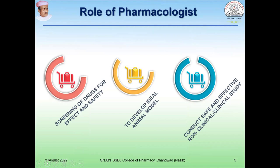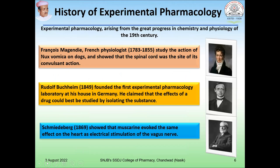So what is the role of the pharmacologist? He does screening of drugs for effect and safety, develops ideal animal models, and conducts safe and effective non-clinical and clinical studies. Many pharmacologists have played a major role in important discoveries, arising from the great progress in chemistry and physiology of the 19th century.